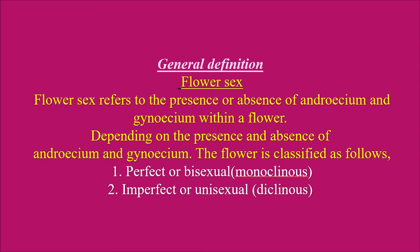Flower sex refers to the presence or absence of androecium and gynoecium within a flower. Androecium is the male part of the flower and gynoecium is the female part. Depending on the presence and absence of androecium and gynoecium, flowers are classified into two types: perfect and imperfect. Perfect flowers are also called bisexual, and imperfect flowers are also called unisexual flowers.